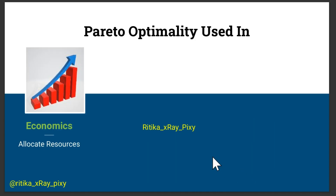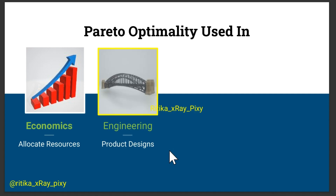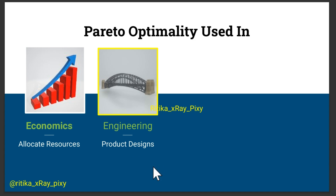Pareto optimality is used in several areas. First, in economics, it is used to allocate resources efficiently in markets. Second, in engineering and design, Pareto optimality is applied in optimizing product designs, balancing different factors like product cost, performance, and durability. It is used in multi-objective optimization problems like vehicle design where safety, speed, and fuel efficiency are all important.